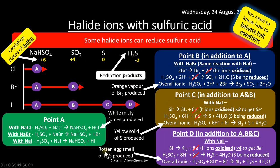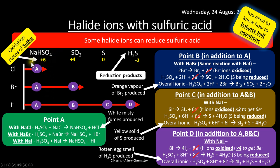Iodide is the most powerful reducing agent, reducing sulfuric acid to SO₂, elemental sulfur, and H₂S. All three reactions also produce sodium hydrogen sulfate, which is not a reduction product but simply a product of the reaction. If you're not comfortable with how these reactions are constructed, please refer back to topic 6.